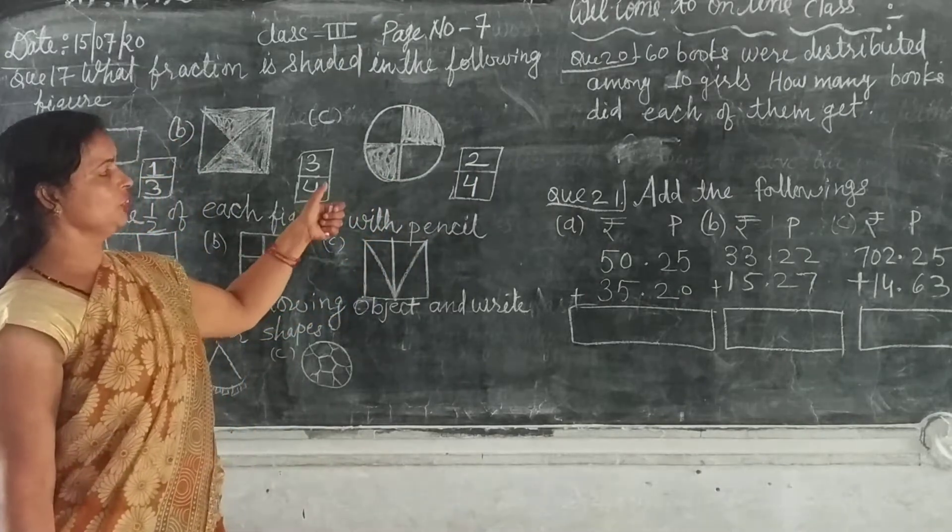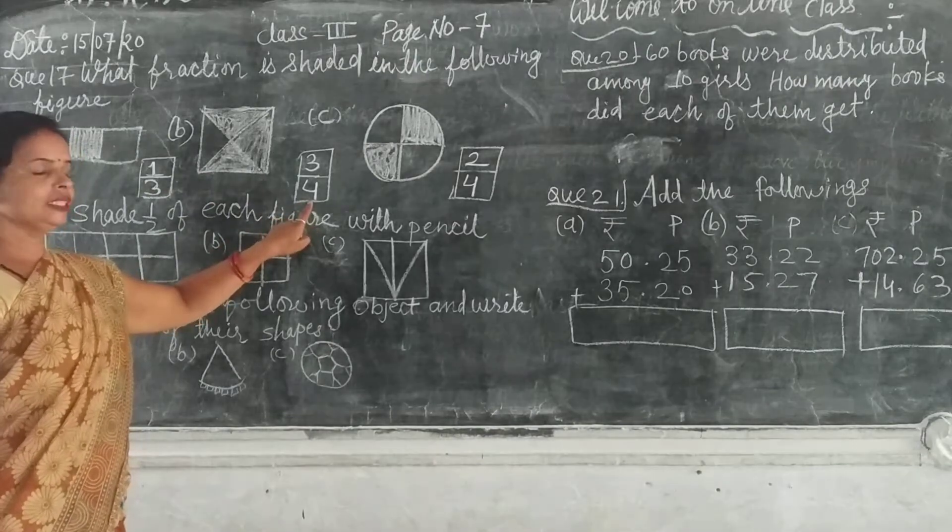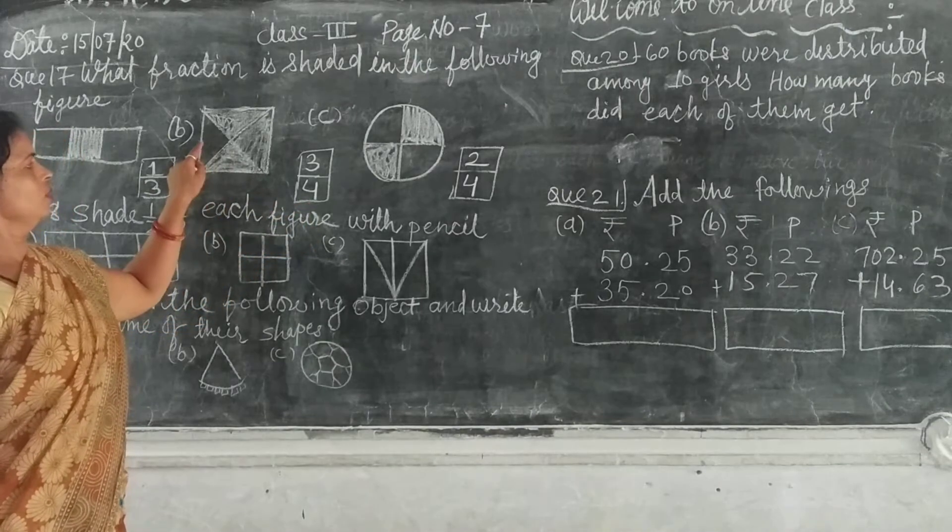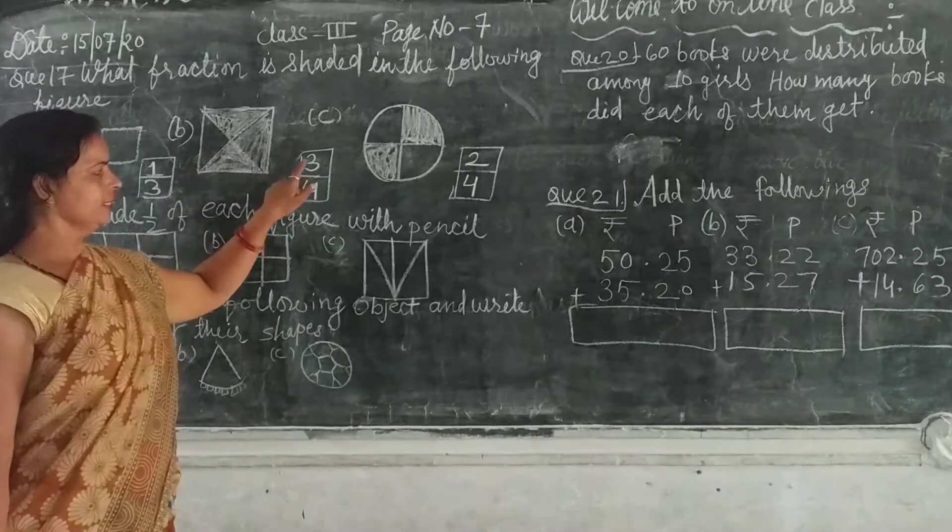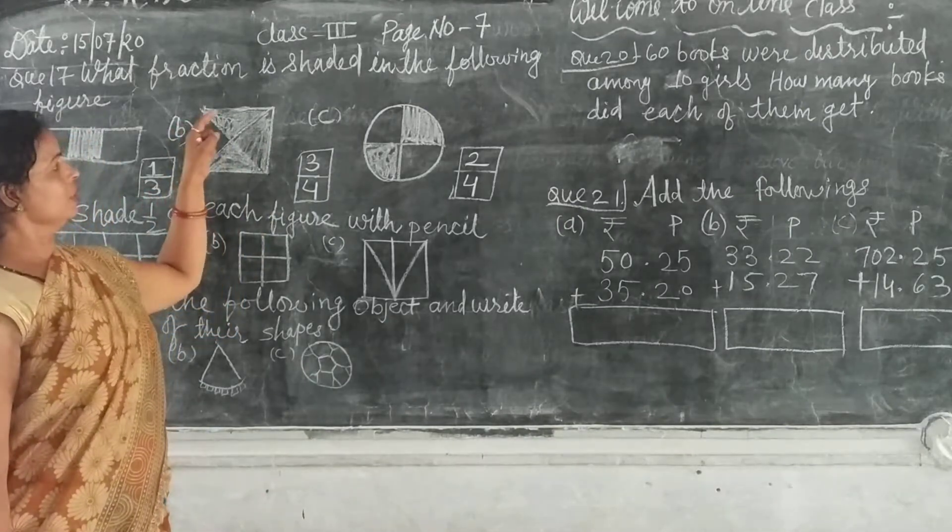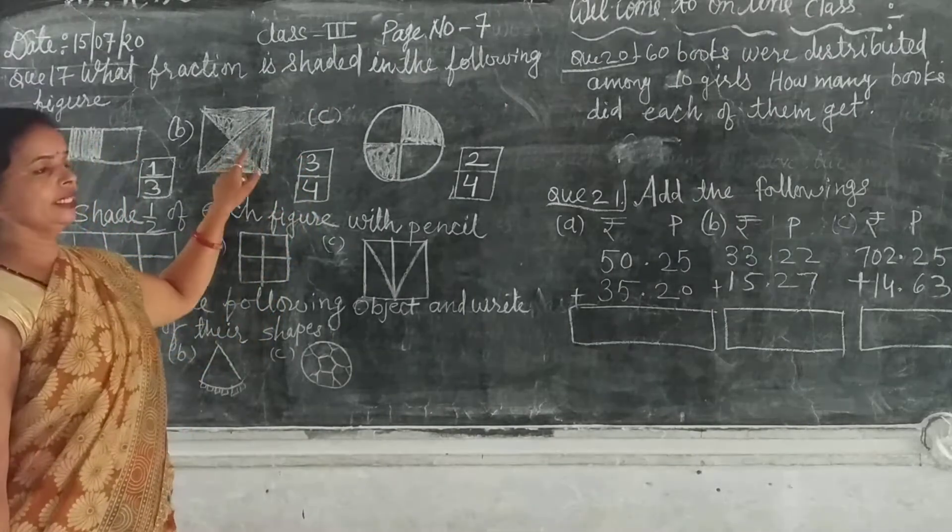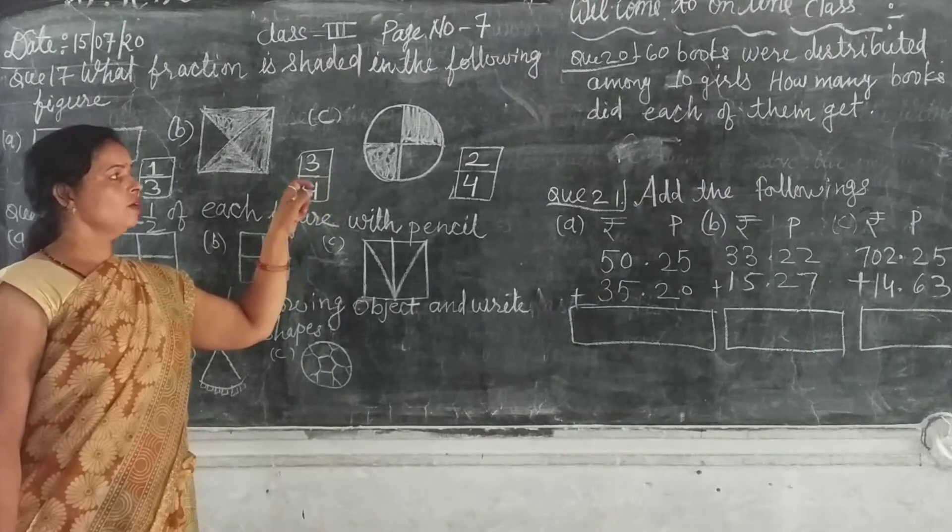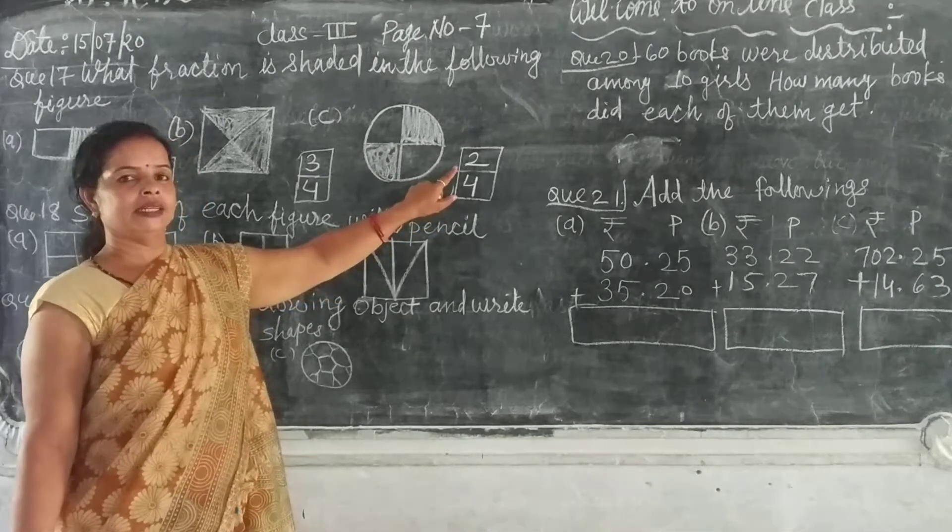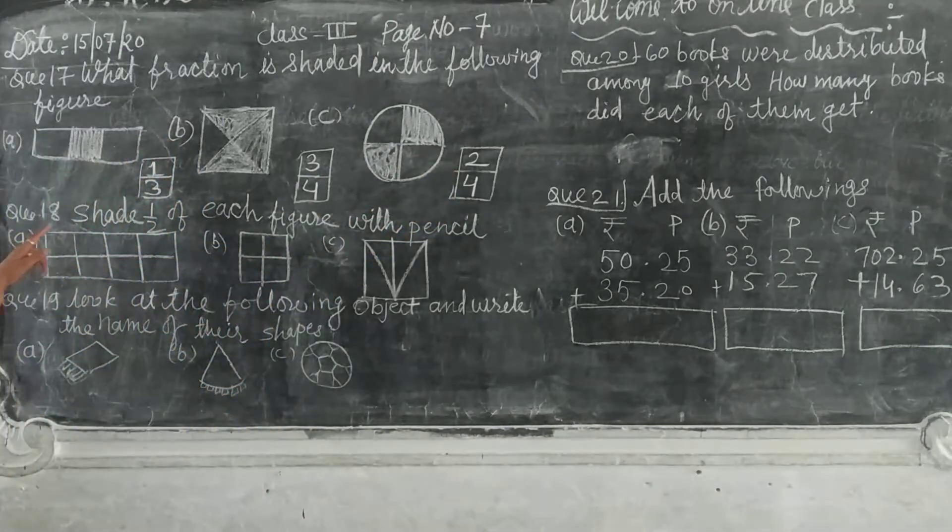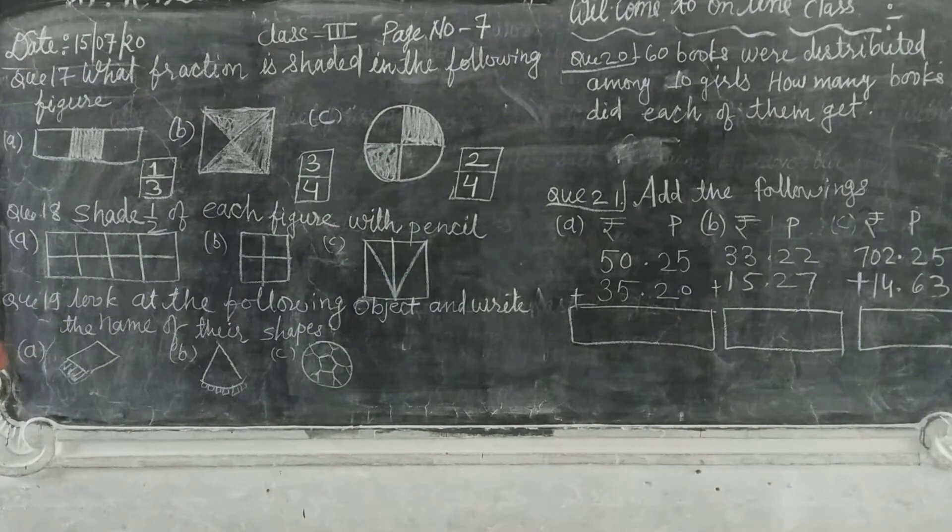If we have some non-shaded part, then what do we do? The total parts are on this way. The total parts are on this way. The non-shaded part is the same. The non-shaded part is this. Then we will take the fraction.